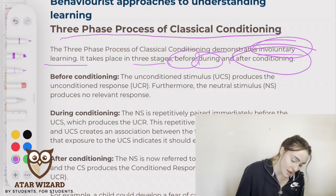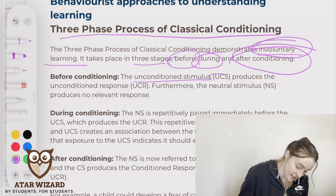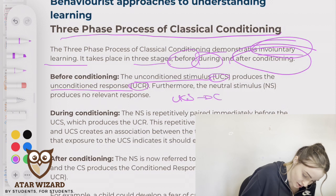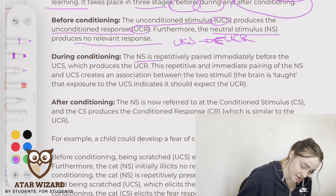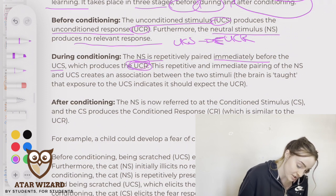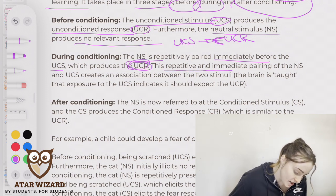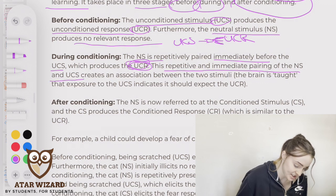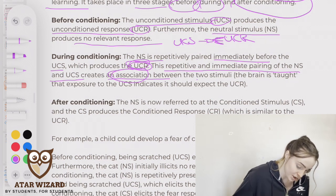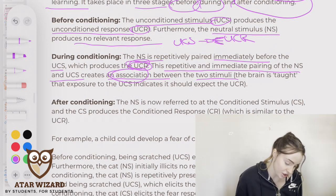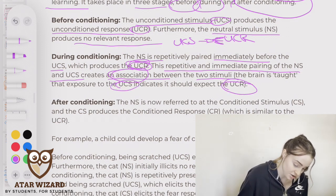Before conditioning, the unconditioned stimulus, or UCS, produces the unconditioned response, or UCR, and the neutral stimulus produces no relevant response. During conditioning, the neutral stimulus is repetitively paired immediately before the unconditioned stimulus, which produces the unconditioned response. This repetitive and immediate pairing of the neutral stimulus and unconditioned stimulus creates an association — it is associative learning.